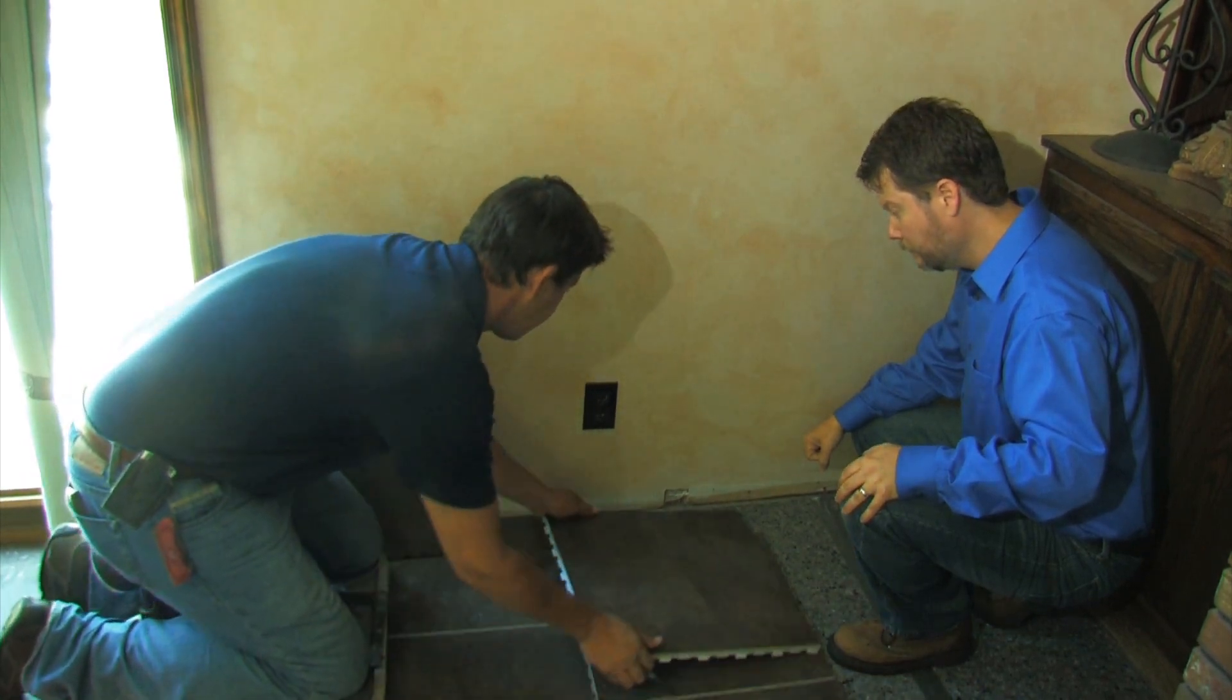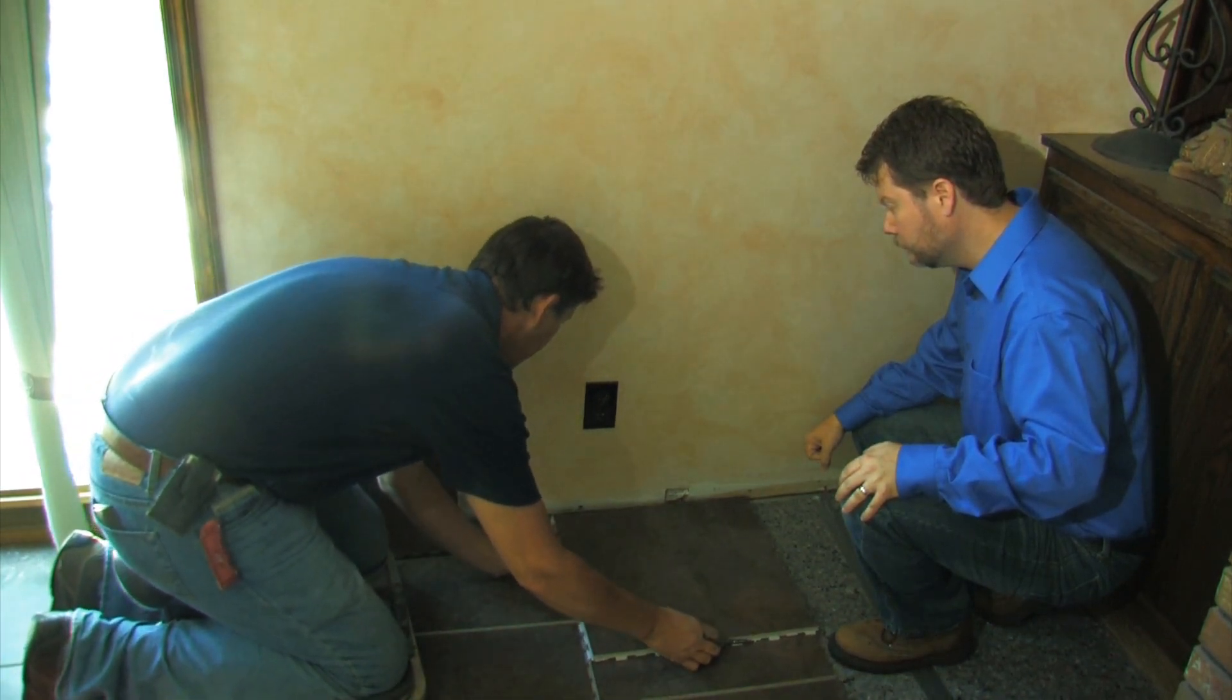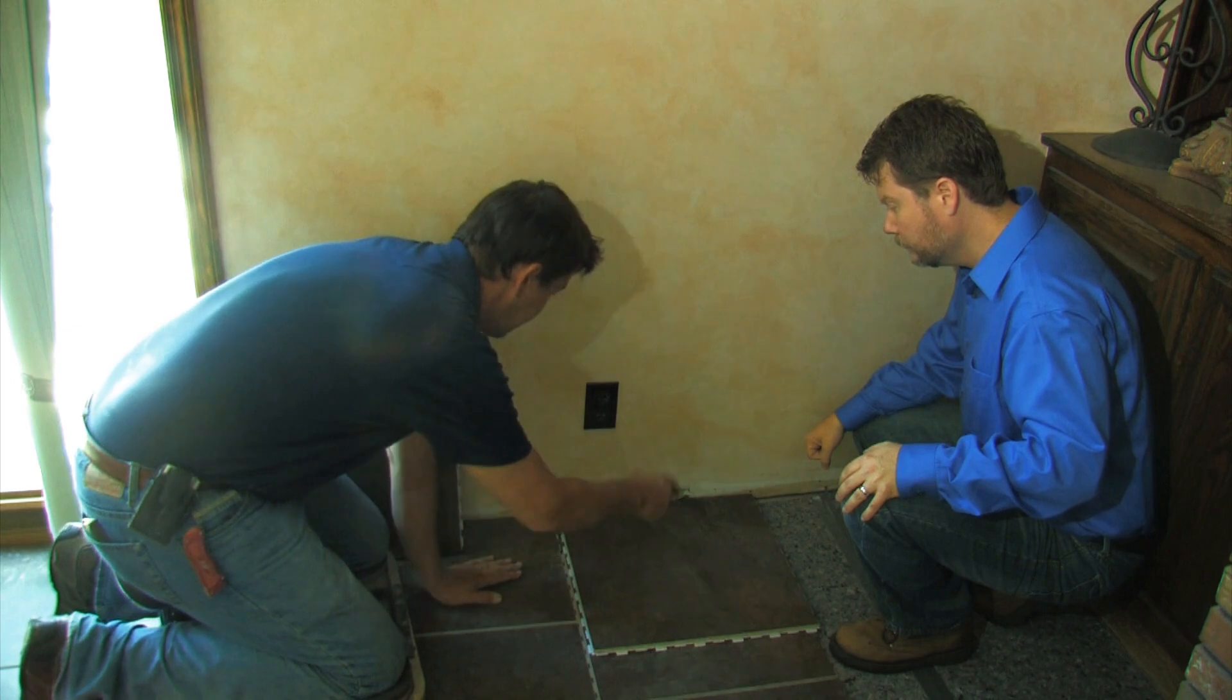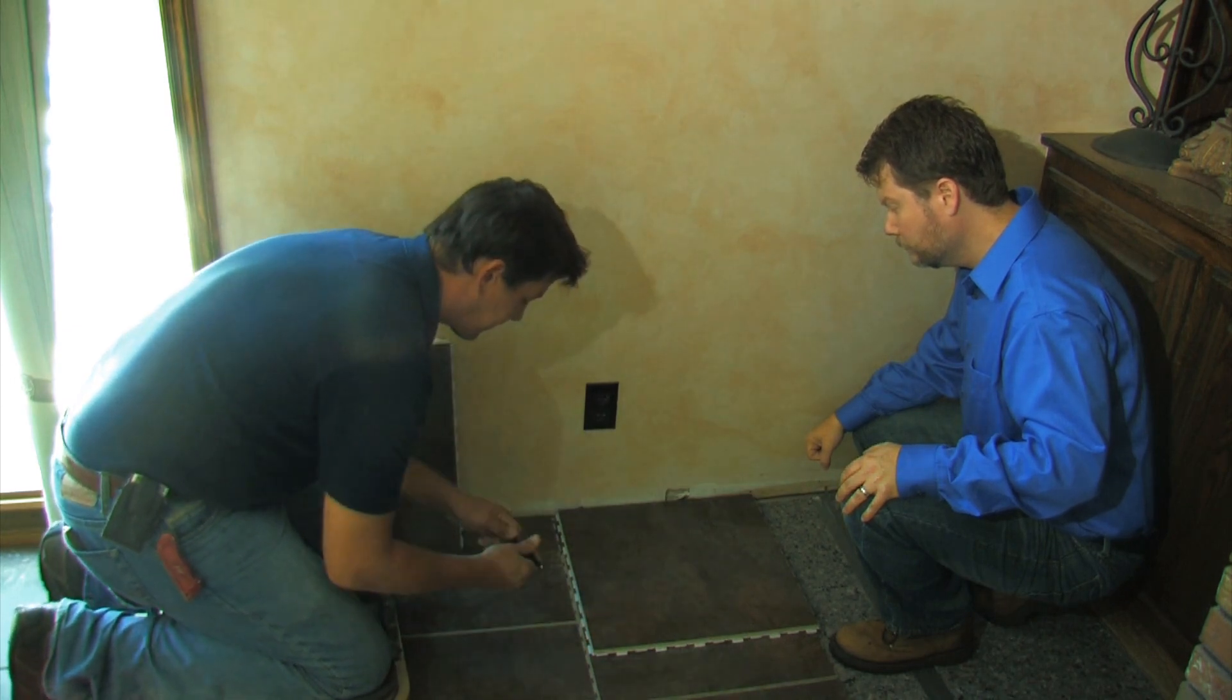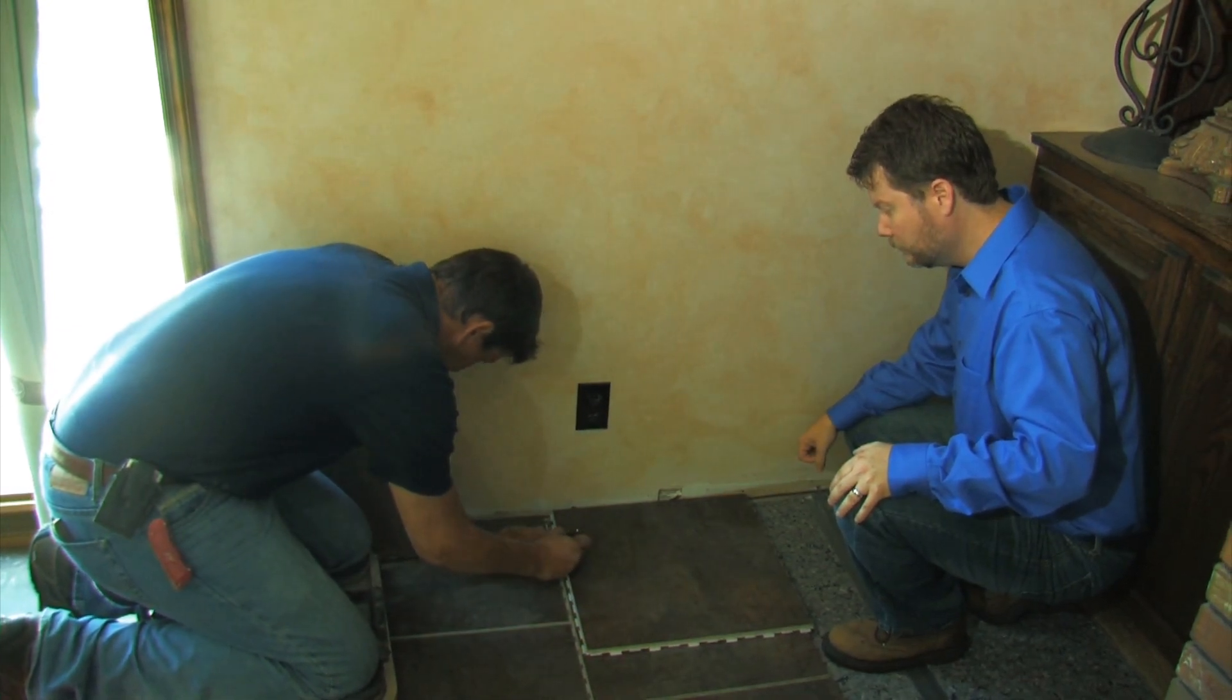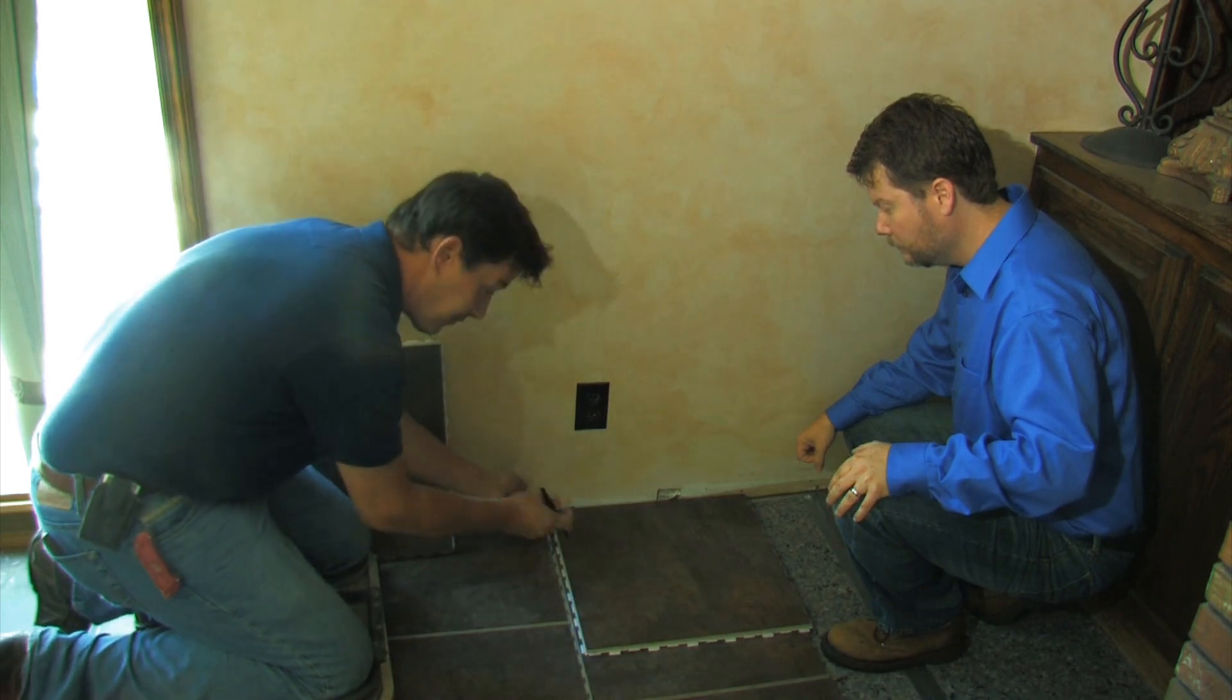Another way is to place the tile in the spot that you want it and press it up against the wall. Now the tabs have automatically given you that quarter of an inch. Simply allow for your grout joint, mark the tile, and you'll have the same mark.